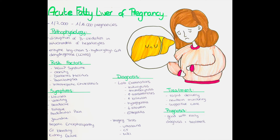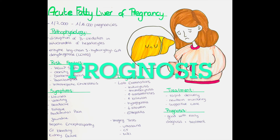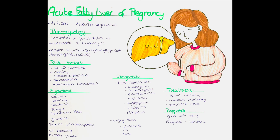Acute fatty liver in pregnancy can be life-threatening for both the mother and the baby, and the symptoms are often non-specific and can be mistaken for other conditions such as morning sickness or gastroenteritis. So early diagnosis and treatment are essential to improve the outcome for both the mother and the baby. The prognosis is generally good if the condition is diagnosed and treated early.